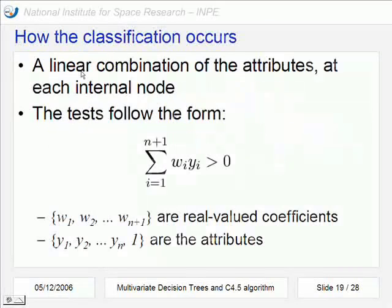And the solution from this multivariate approach is that it uses more than one attribute in the test leaves. This multivariate approach is a linear combination of the attributes at each internal node. The tests are in this way. We make a sum using weights and the attributes. Here the weights are real value coefficients.